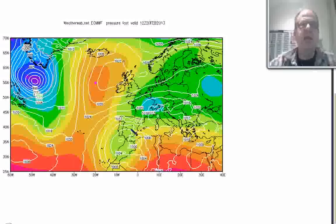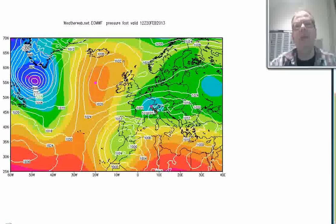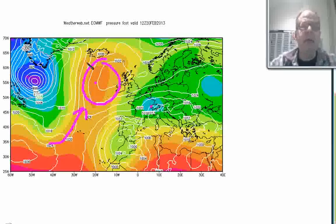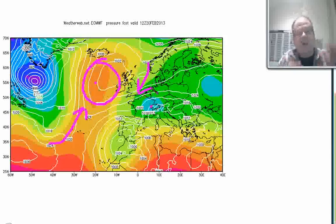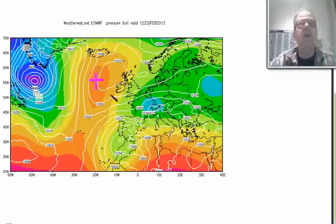We've got the center of the ridge in there, and just down here we've got this blue color — the blue color indicates low heights. So there's the opposite here: here we have a center of high heights, and here we've got a center of low heights. What's happening is the air is pumping north, building this ridge. In here, air is pumping south and because it's cold air, that cold air is more dense.